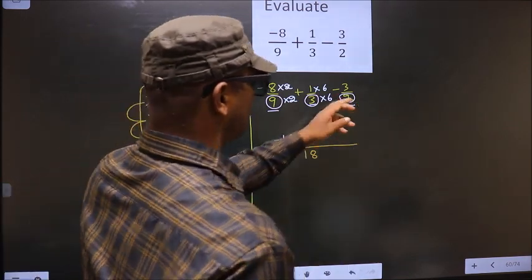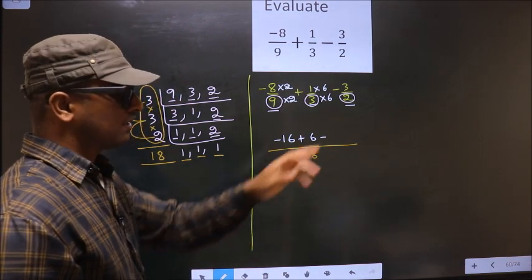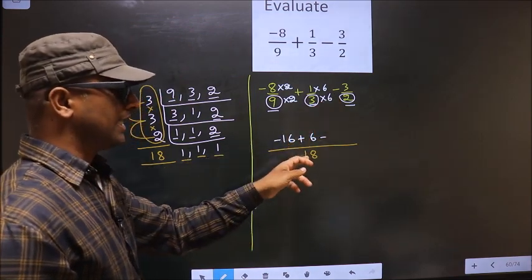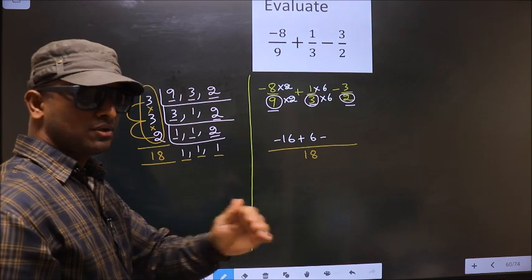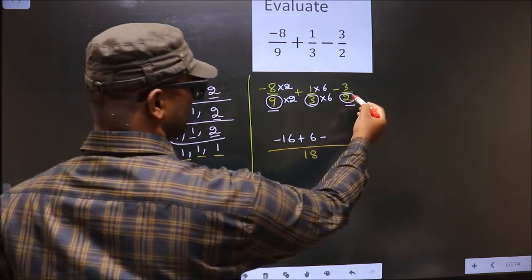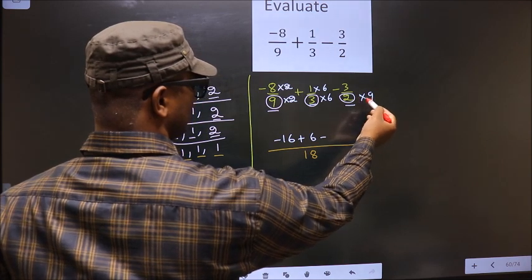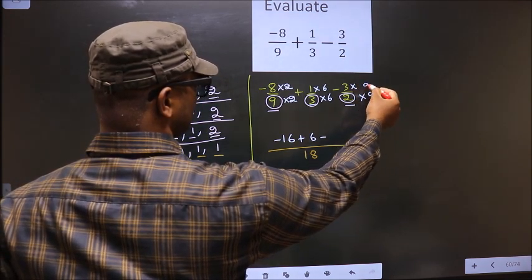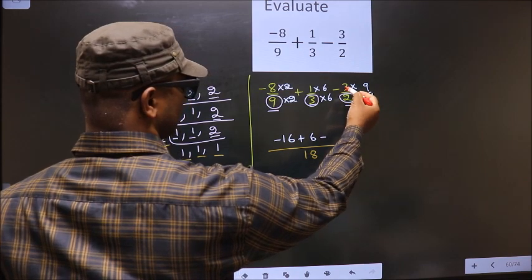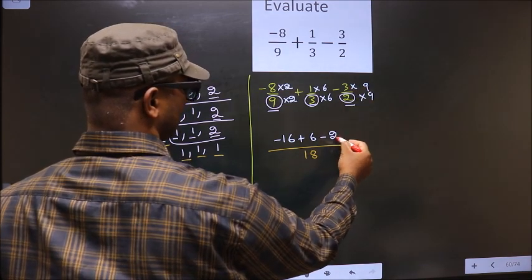Negative symbol as it is. Here we have 2. Here 18. Now 2 should change to 18. For that to happen, we should multiply by 9. Whatever number you are multiplying here, in the numerator also we should multiply by the same number. So we get 3 into 9, 27.